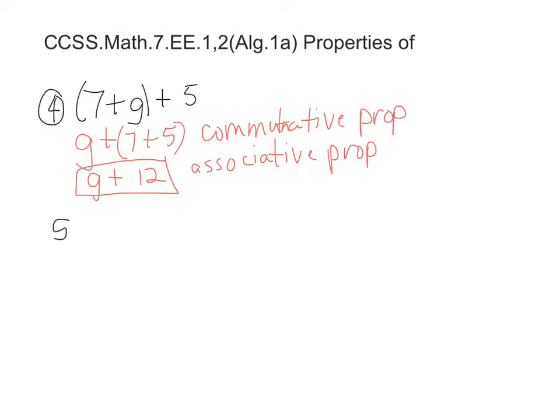Let's move on to number 5. Simplify the expression and justify it. This one here, we have x times 11 in a group times x. They want you to simplify it and justify it.